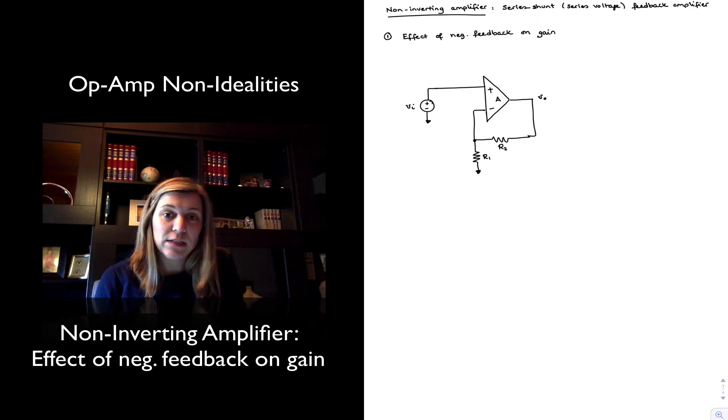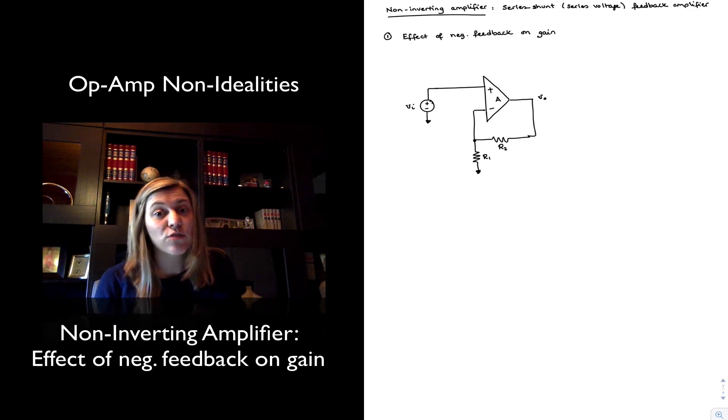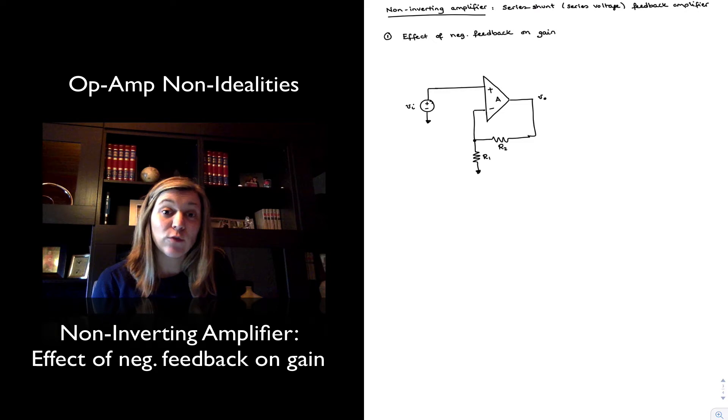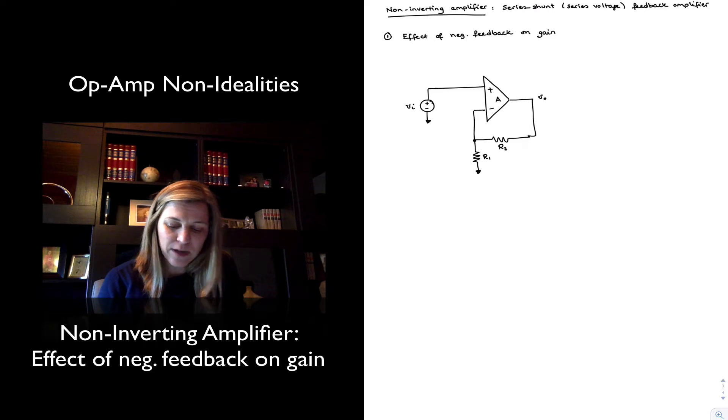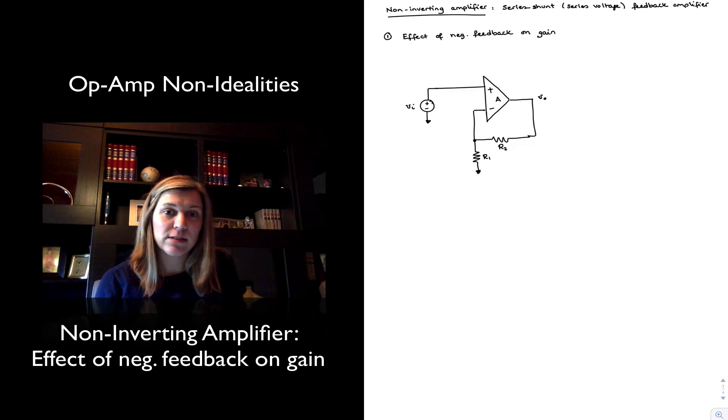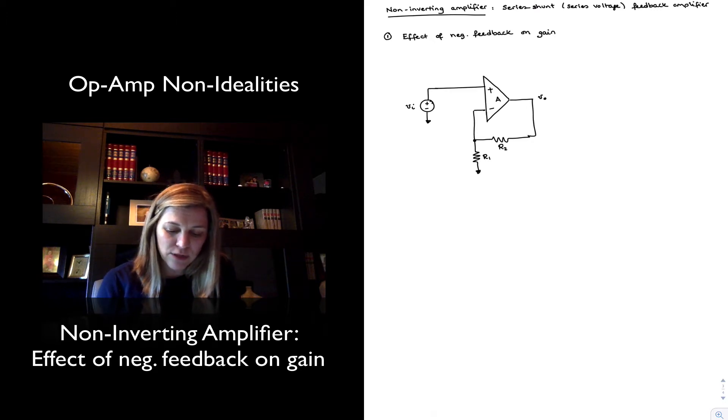We had already studied previously how the series voltage or series shunt configuration was the ideal configuration for a voltage amplifier. We're going to see very soon why. But first, let's analyze the effect on gain and corroborate that it indeed reduces and stabilizes the gain of the non-inverting amplifier.